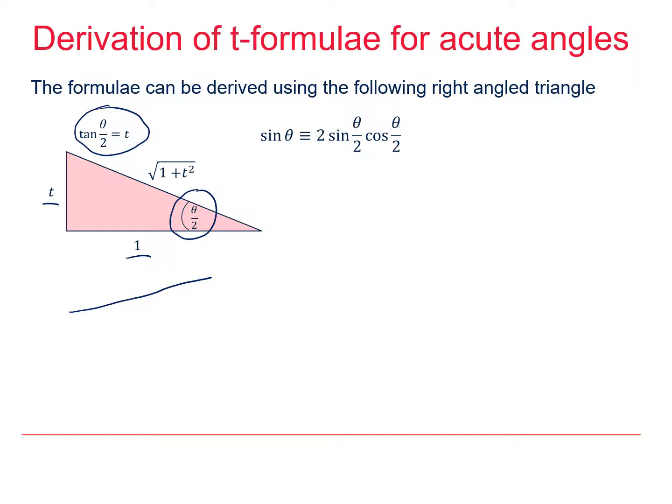And then by Pythagoras' theorem I can see that the hypotenuse is the square root of 1 squared plus t squared. So expressing sin θ using the double angle formula but halving all the angles as we saw earlier, we can end up working our way through this.